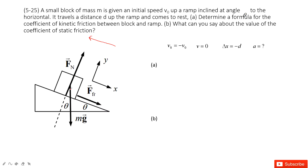Through the force analysis, we have gravity, normal force, and friction. We project gravity into two components: the S component and the Y component. So we have mg·cos(θ) and mg·sin(θ). We can solve it using Newton's second law.